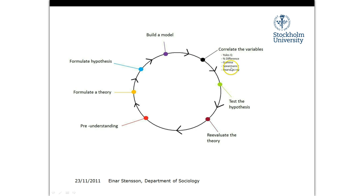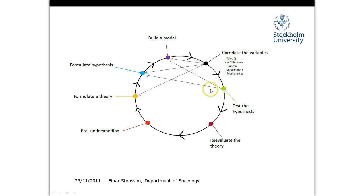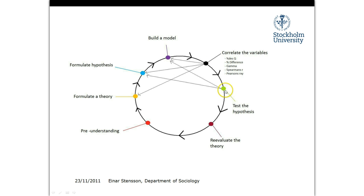Then you start correlating these variables, using some of the correlation measures we're going to cover. I should mention that this order of doing things isn't always how it goes. Sometimes you correlate your variables and realize your model is wrong and have to redesign it, or your hypothesis is screwed up, or even your theory. You move around in this circle, around and around. That's okay, but you really do have to mention it when writing your paper — you have to be clear and honest in your research process.